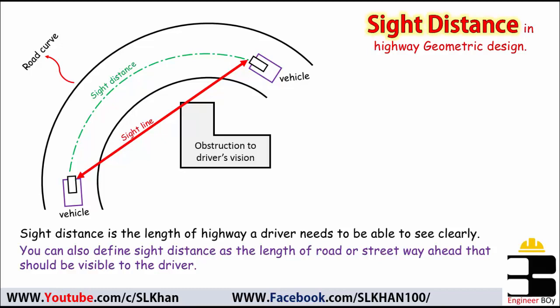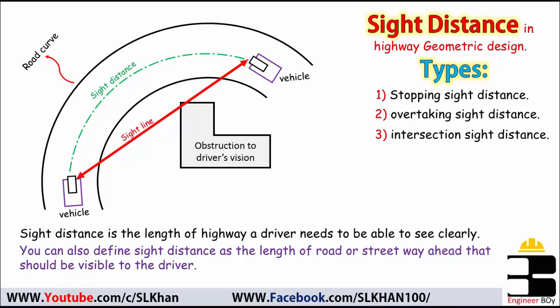You can also define sight distance as the length of road or streetway ahead that should be visible to the driver. There are a few types of sight distance which can be considered while designing a highway or road, like stopping sight distance, overtaking sight distance, and another one is intersection sight distance.